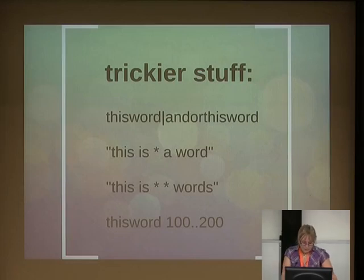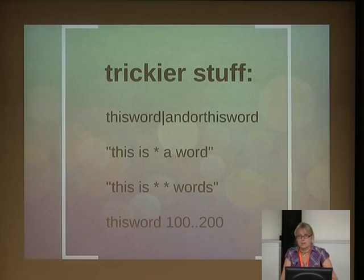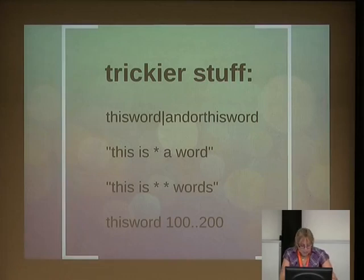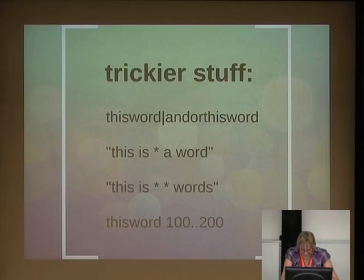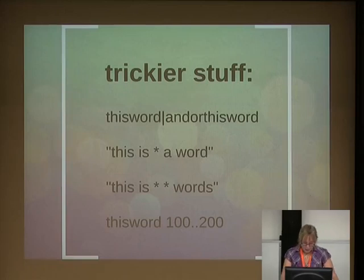Google also does a number range search. I particularly like this for looking for something across a range of dates — so if I'm looking for something across the 1980s, you can use your keyword and put your range of numbers in there. They have given this some scrutiny because people were using it to find social security numbers and credit card numbers, but it generally works. You may get a CAPTCHA if it thinks you're a bot, but it's particularly handy for date range searches.